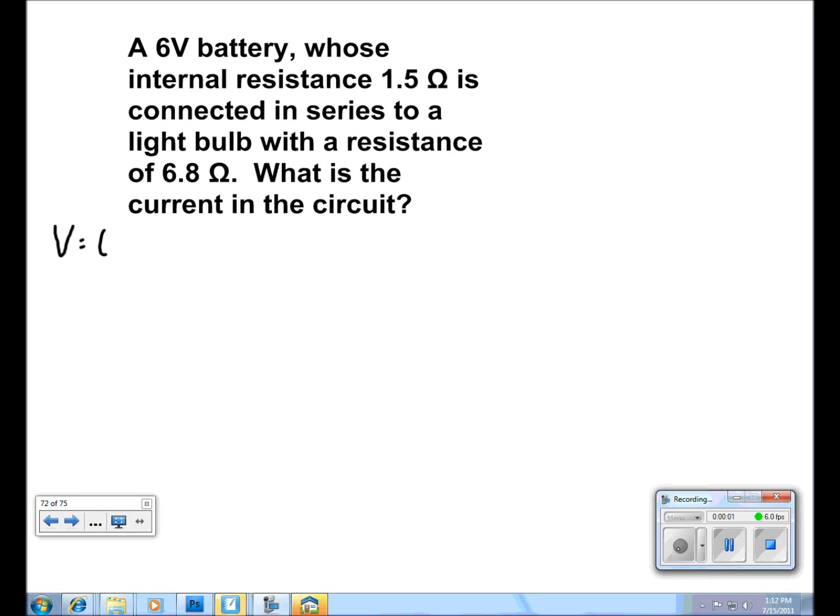In the next problem, we're asked to find the current of the circuit. We know that voltage is 6 volts and that the internal resistance is 1.5 ohms. We know the external resistance is 6.8 ohms.